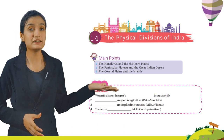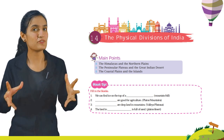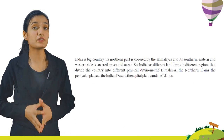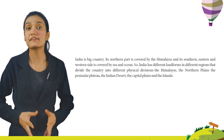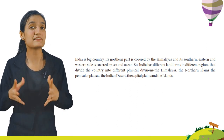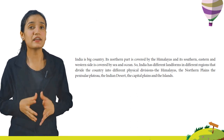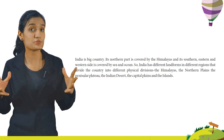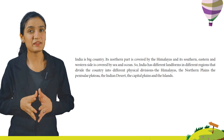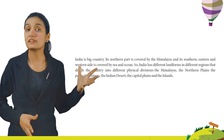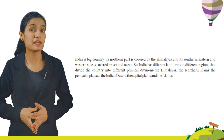You have to read carefully the sentence and fill in the blanks accordingly. India is a big country. Its northern part is covered by the Himalayas and its southern, eastern and western side is covered by sea and ocean. India has different landforms in different regions that divide the country into different physical divisions: the Himalayas, the Northern Plains, the Peninsular Plateau, the Indian Desert, the Coastal Plains and the Islands.